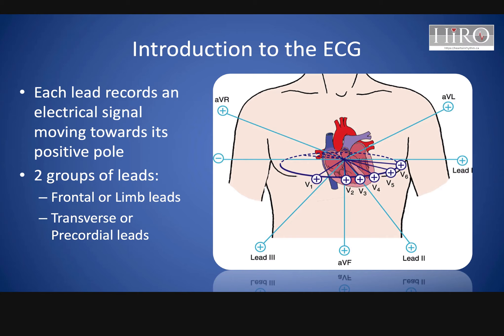An ECG is essentially a recording of the electrical signal of each heartbeat. The first thing to understand is what a lead is. A lead looks for an electrical signal or current that goes from one direction to the other. Lead one, for example, looks for a current going from your right shoulder to your left shoulder. If an electrical signal goes towards the lead, it's a positive deflection; if it goes away from it, it's a negative deflection.